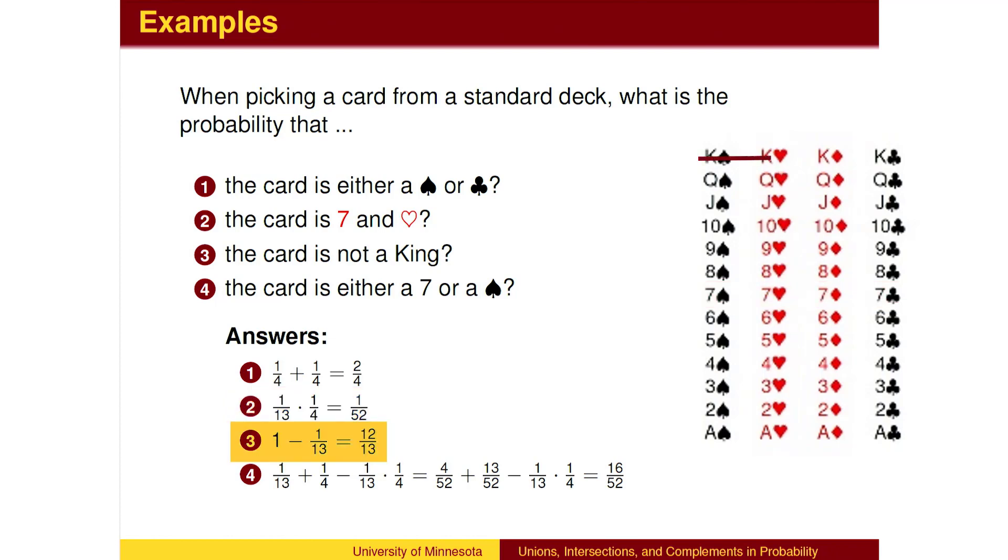There are 13 ranks, of which king is one of the 13. So the other 12 ranks are not king. In the last example, we need to account for the overlap. There are 4 7s and 13 spades, which makes 17 possibilities. But we counted the 7 of spades twice, so we subtract the overlap to get 16 out of 52.